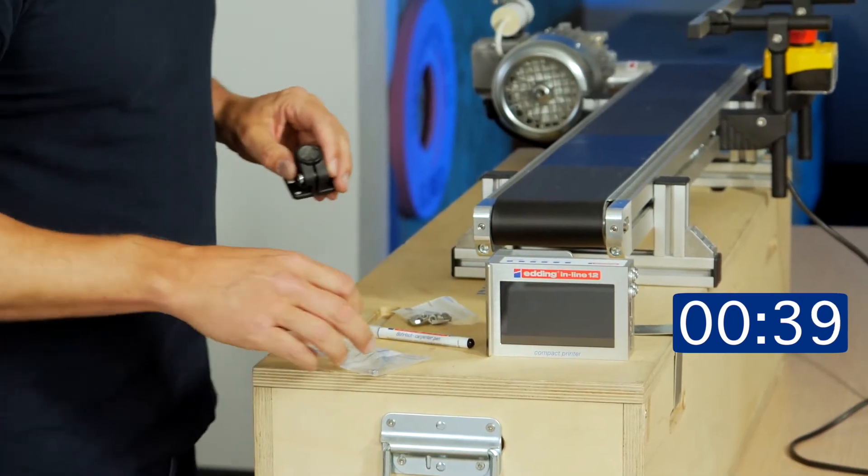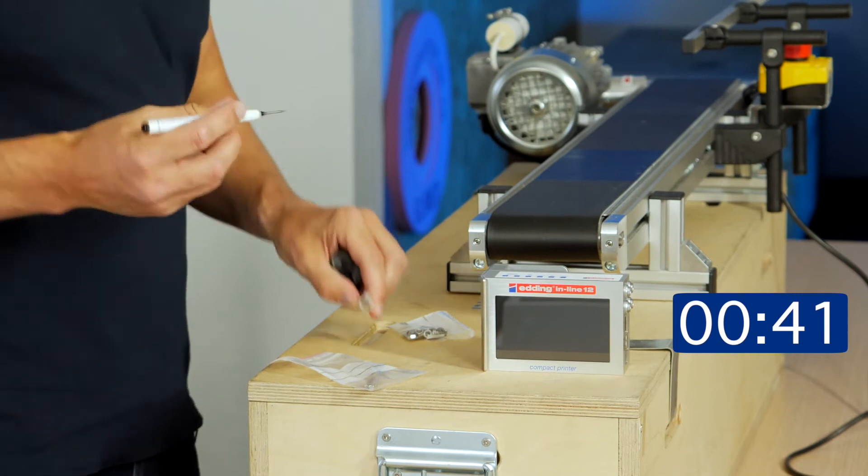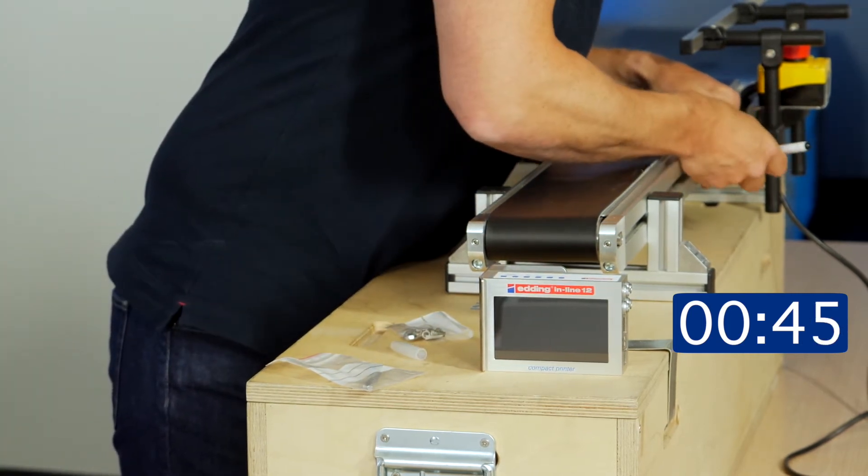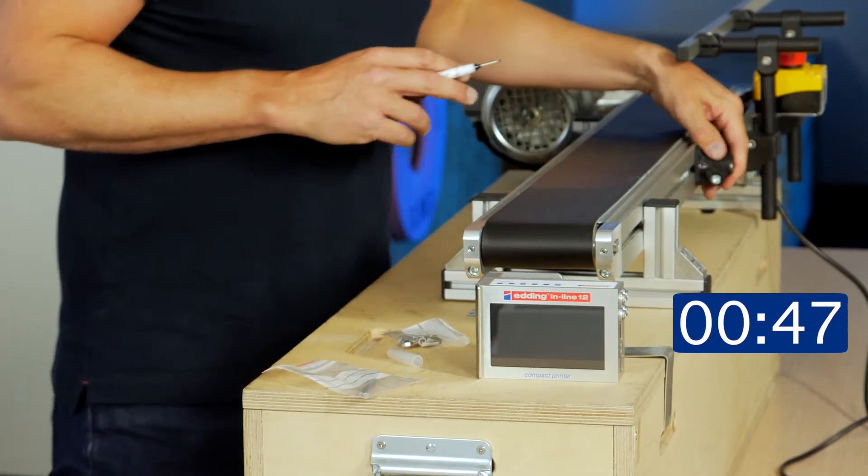First, we start with the base clamp and the hole marker to mark the position where we want the base clamp.